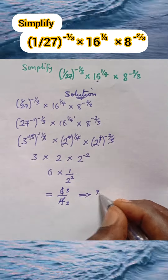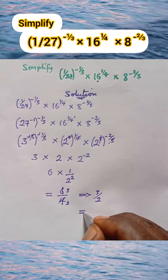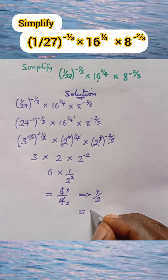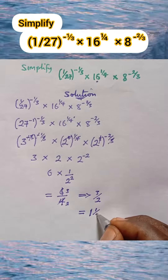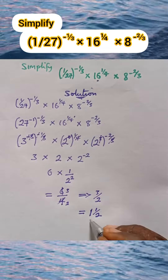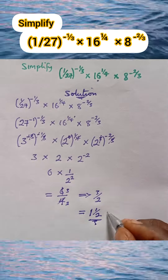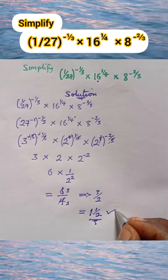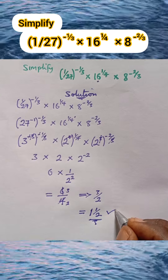We have 3 over 2, and when you divide this, our final answer becomes 1 whole number 1 over 2. And this is the final answer. Thank you very much for watching.